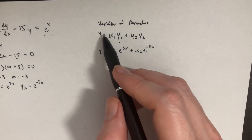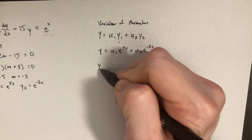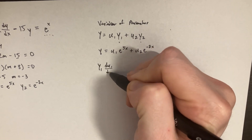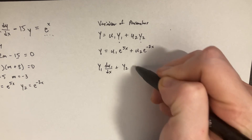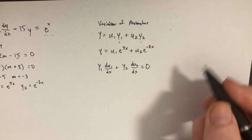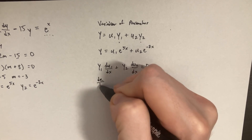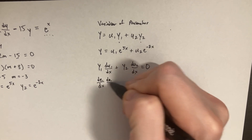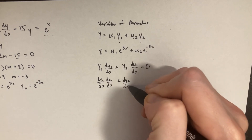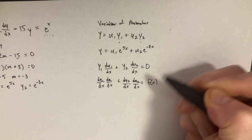The goal with variation of parameters is to get a system: y1*(du1/dx) + y2*(du2/dx) = 0, and then (dy1/dx)*(du1/dx) + (dy2/dx)*(du2/dx) = f(x).